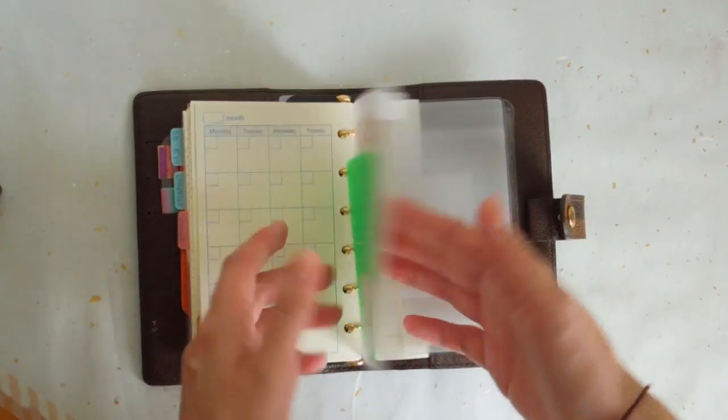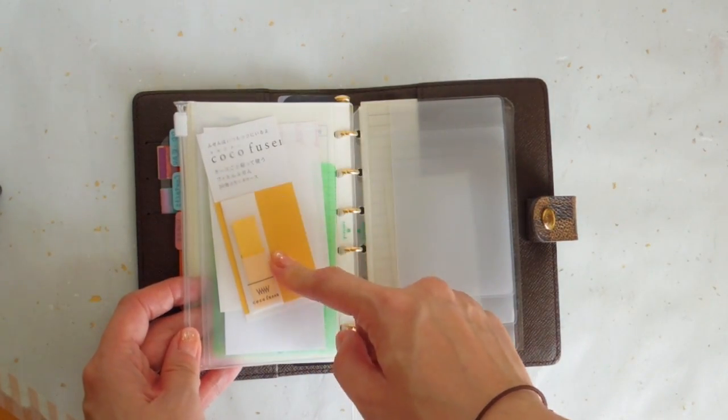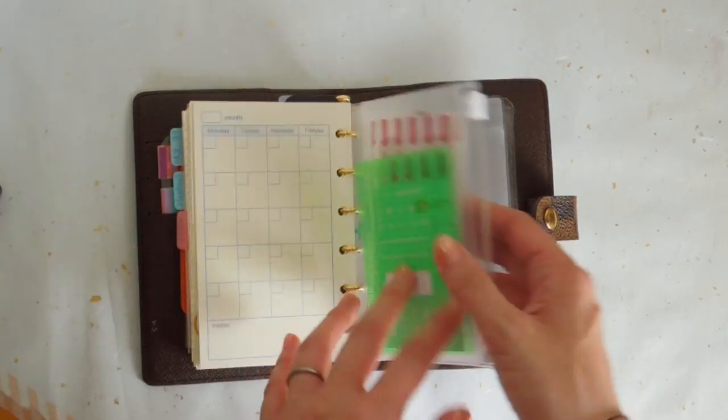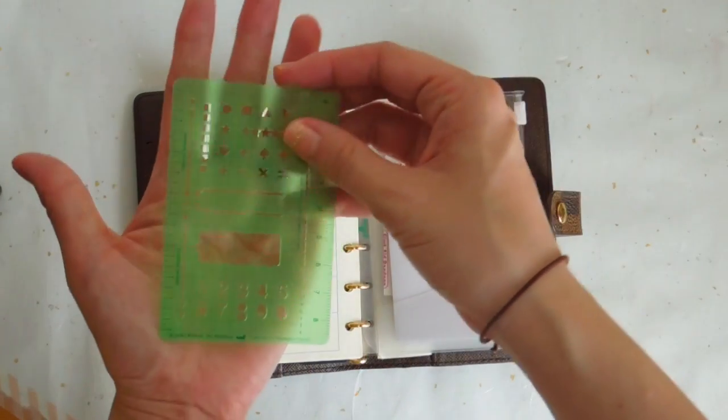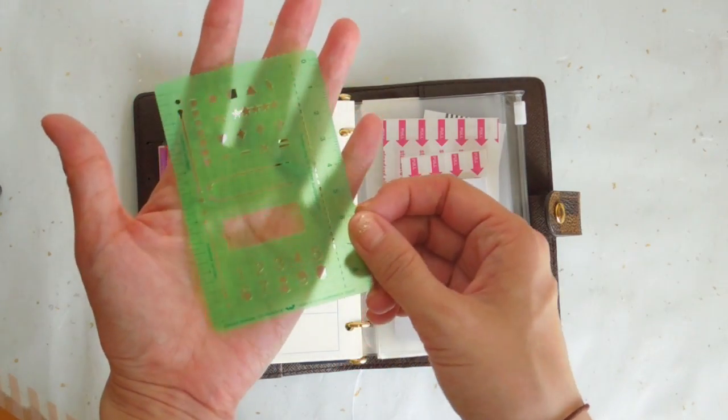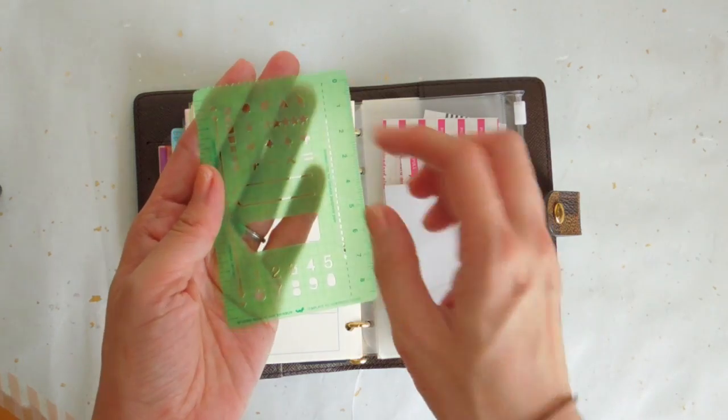And then I have this zip pouch, which is from the brand called Ashford. I just have some band-aids. This page flag there. This Hobonichi stencil, which is awesome. I should use a lot more often, but I always forget that I have.